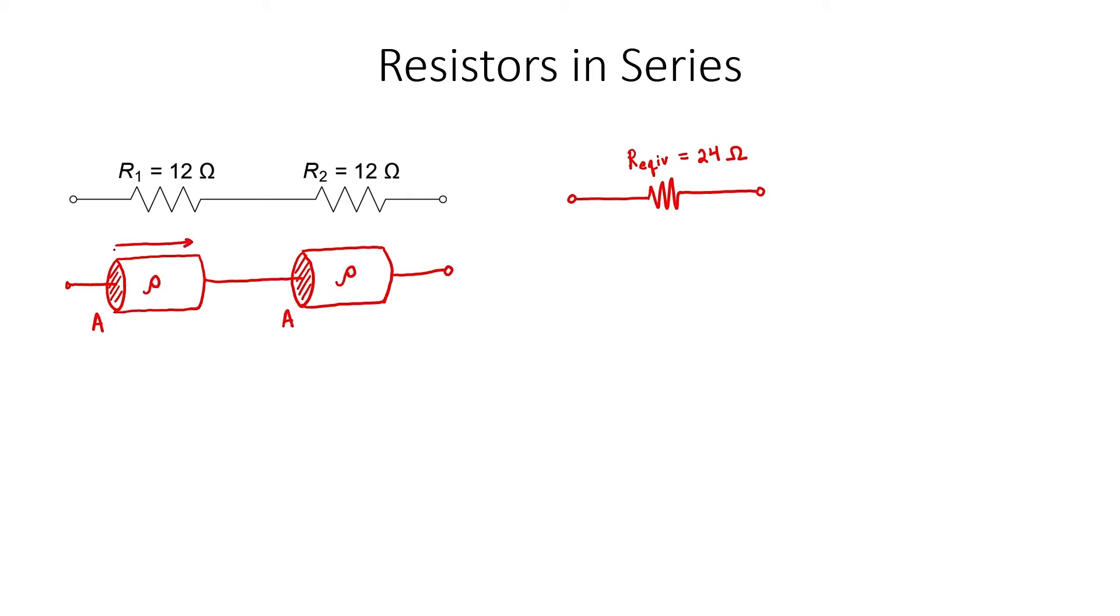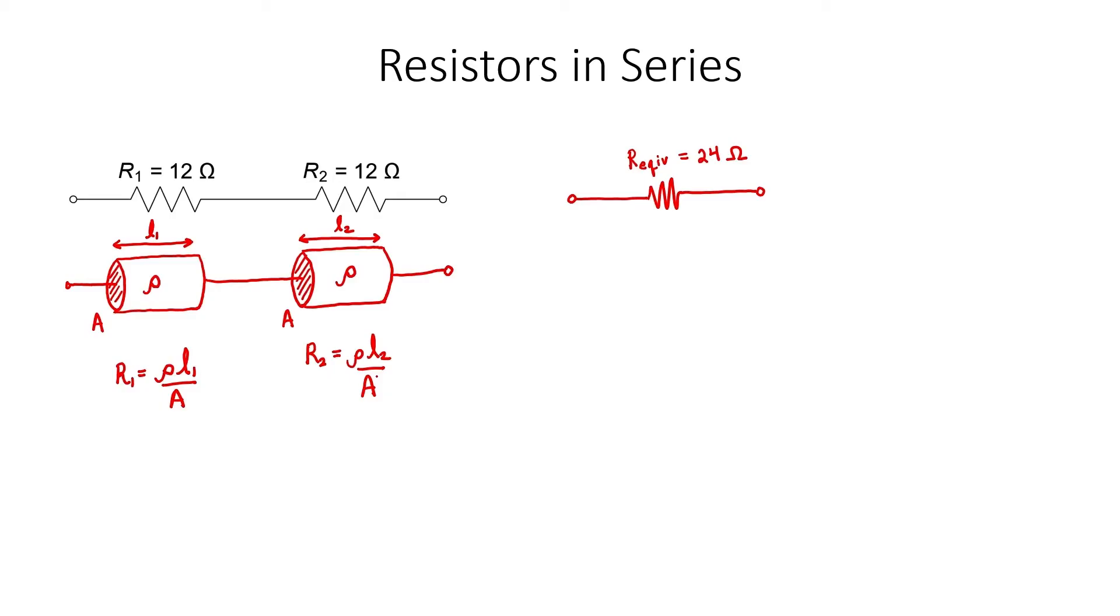Let's assume that resistor R1 has length L1 and resistor R2 has length L2. The formula for resistance is rho L over A. Let's now think about the geometry of the equivalent resistor. If we look at these two resistors R1 and R2 and we smoosh them together into a single resistor, what would the length be of that resistor? It would just be L1 plus L2.